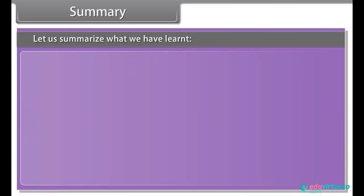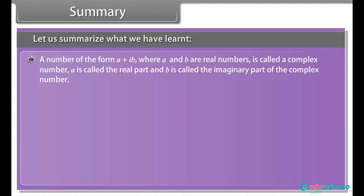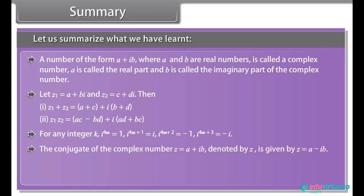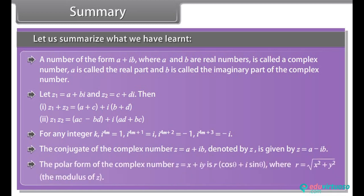Summary. A number of the form A plus B iota, where A and B are real numbers, is called a complex number. A is called the real part and B is called the imaginary part. Let Z1 equal A plus B iota and Z2 equal C plus D iota. The conjugate of a complex number Z is denoted Z-bar, and the polar form represents the complex number in terms of modulus and angle. Thank you.